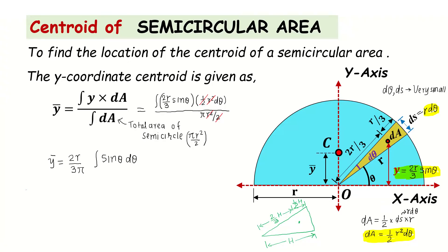So the sector starts from θ = 0 and rotates completely to θ = π radians for the semicircle. We consider the integration limit from θ = 0 to θ = π. With this, we can integrate and get the final answer.